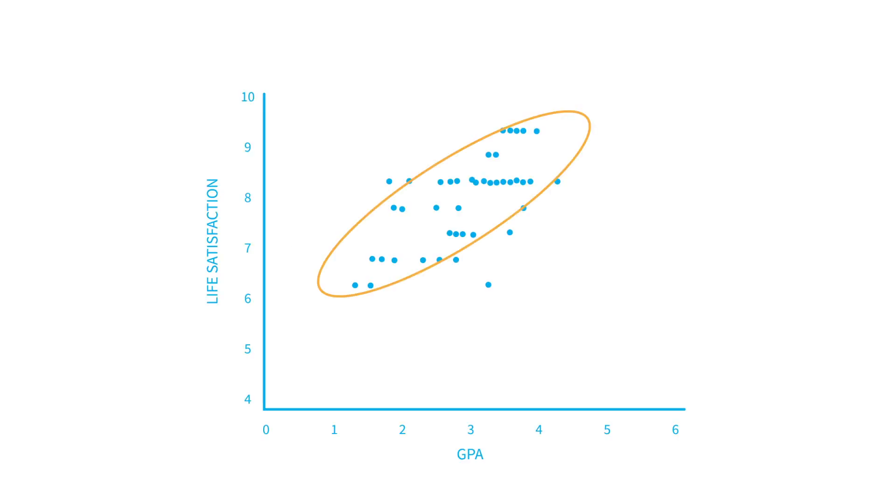We can summarize the data on the graph by drawing a line roughly through the middle of all the data points. This is the regression line and we can use it to estimate or model the relationship between our independent and dependent variables.